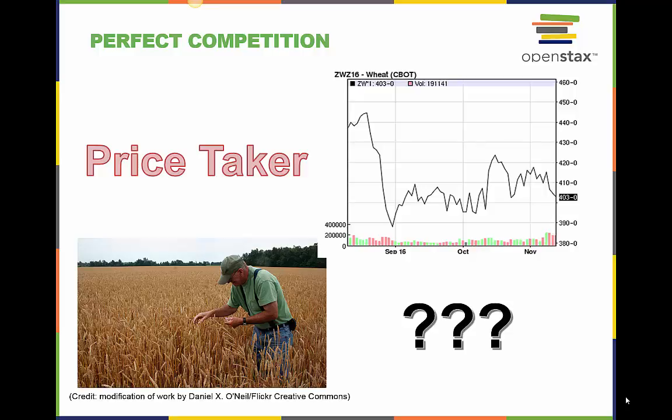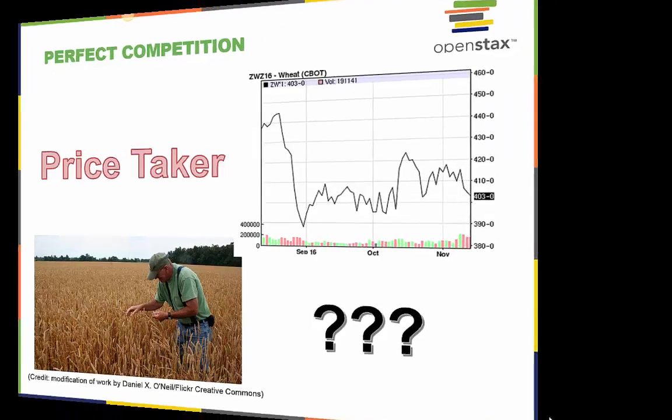A price taker is what a firm in a perfectly competitive market is, in that it must take the prevailing market price. For example, a wheat farmer must take the market price for wheat if they want to sell their wheat. In this chapter, we will discover how firms make production decisions in a perfectly competitive market.